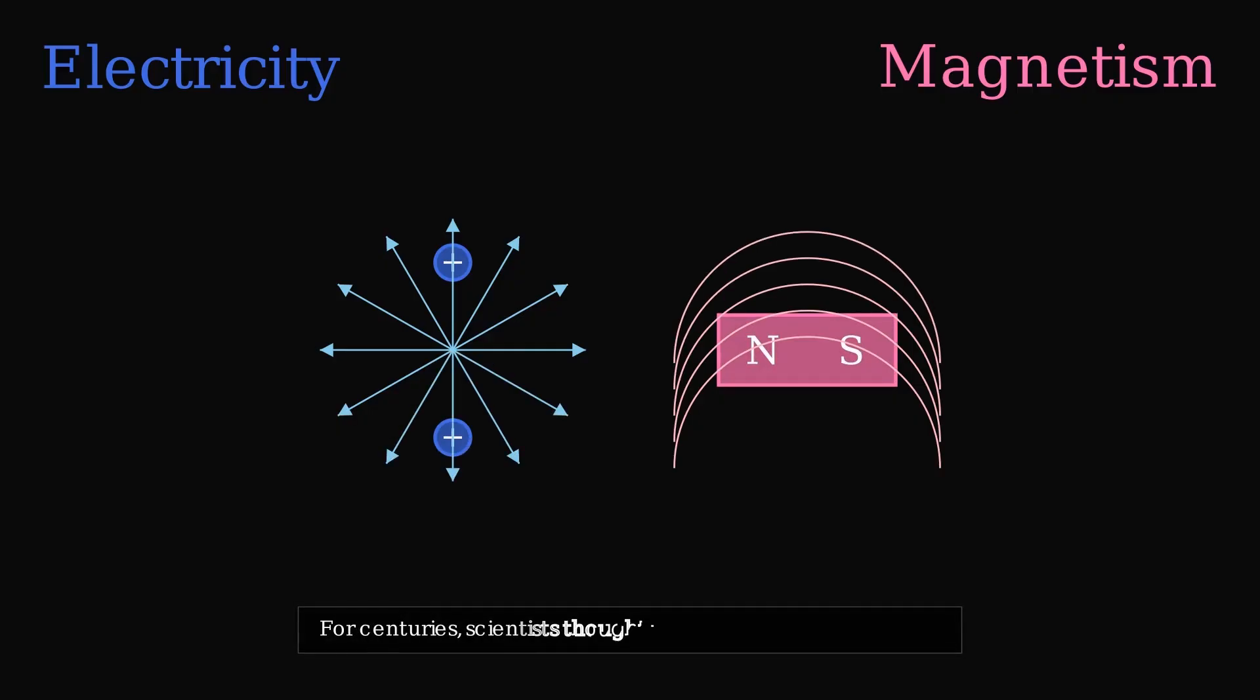For centuries, scientists thought electricity and magnetism were separate forces. On one side, we had electricity, charges creating electric fields that radiate outward.